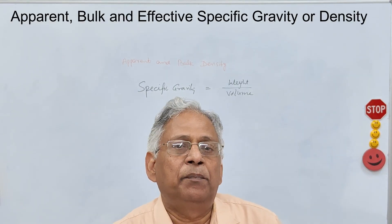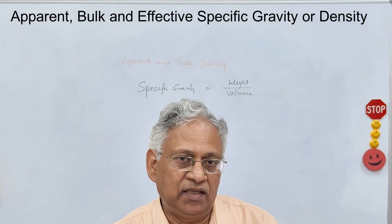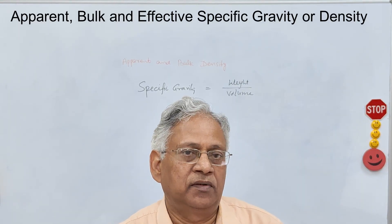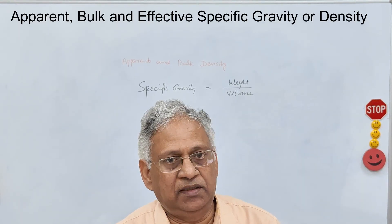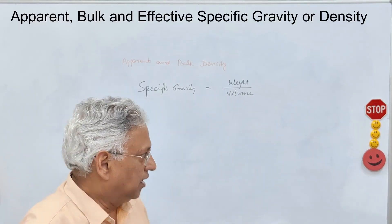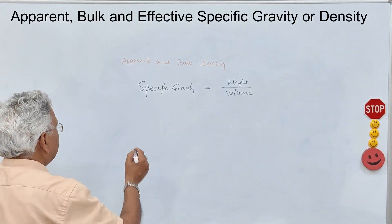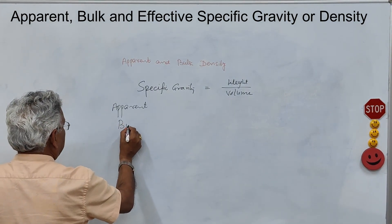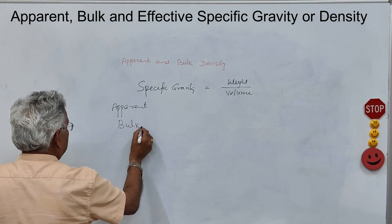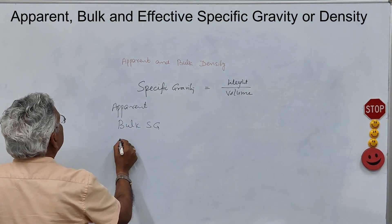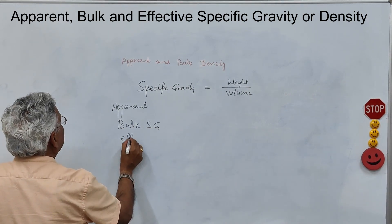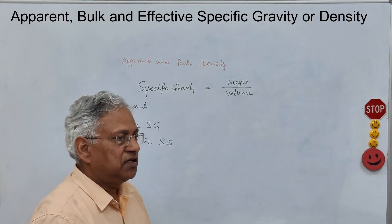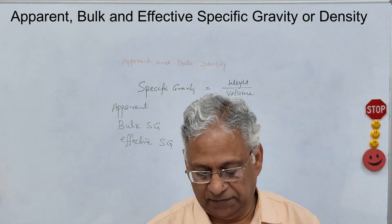Now, depending upon which volume of aggregate is considered, there are three types of specific gravities: apparent specific gravity, bulk specific gravity, and effective specific gravity. Today we shall discuss the difference between these three.